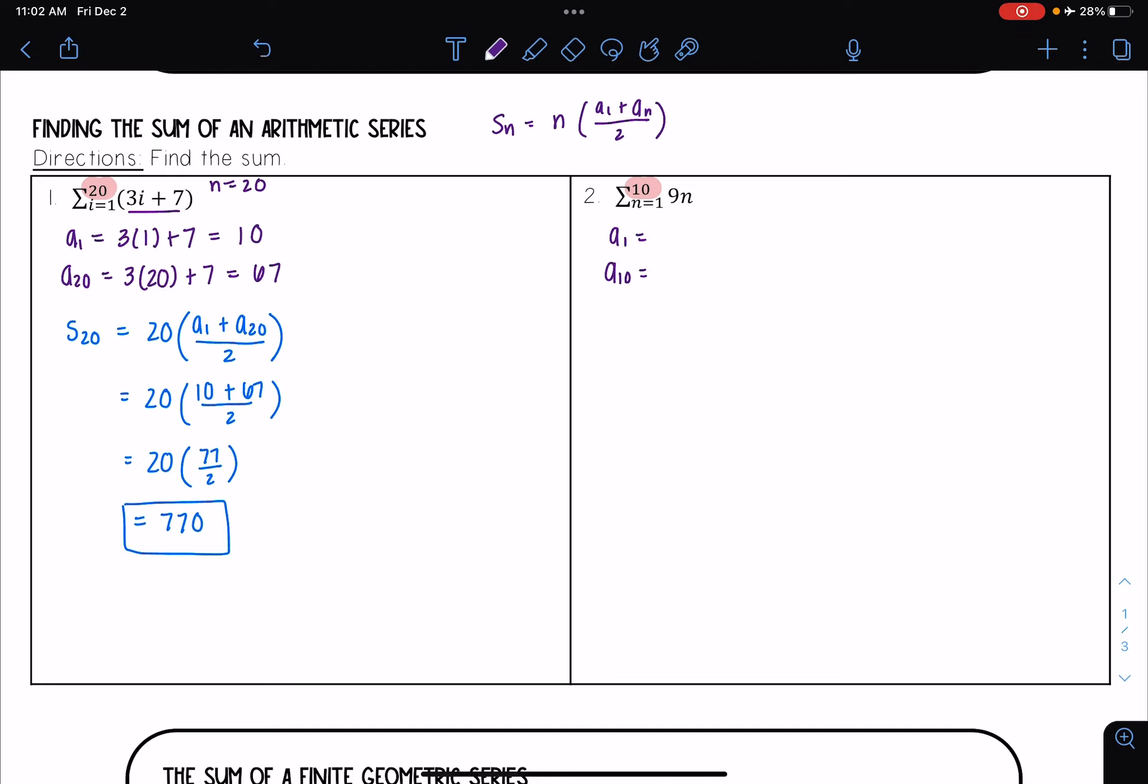Well plugging 1 into my rule here which is 9n, I have 9 times 1 which is equal to 9. Plugging in 10 I have 9 times 10 which is equal to 90.